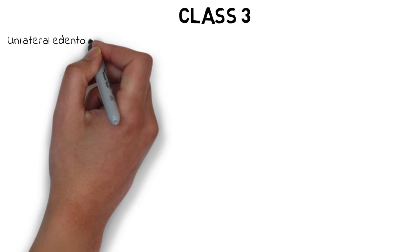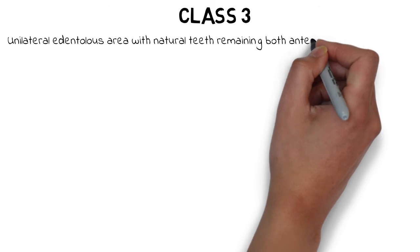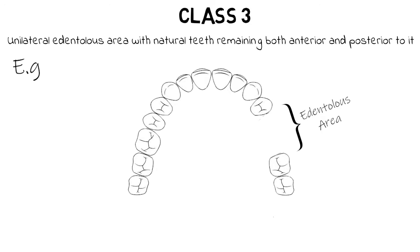Class 3 states that there is a unilateral edentulous area with natural teeth both anterior and posterior to it. For an edentulous area to be classified as Class 3, it needs to be a unilateral edentulous area located between the natural teeth. For example, if the second premolar and first molar are missing and this area is between the remaining natural teeth, it is classified as Class 3.